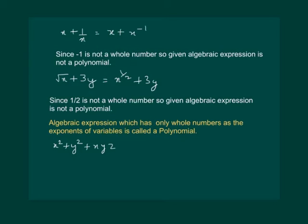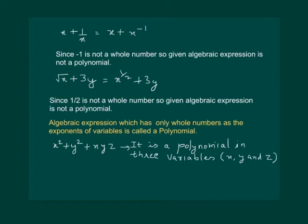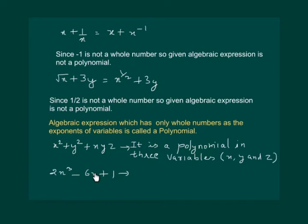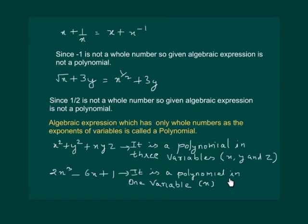Consider another example of an algebraic expression. Since all the exponents of the variables are whole numbers, we can say that the given expression is a polynomial in three variables, namely x, y and z. But in this class, we will only study polynomials in one variable. Consider this example — it is a polynomial as all the exponents of the variable are whole numbers and it has only the variable x. From now on, we shall only discuss polynomials in one variable.